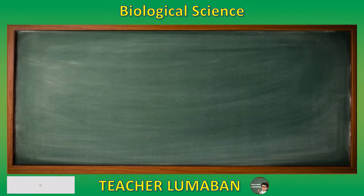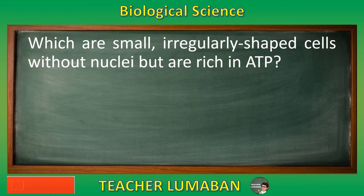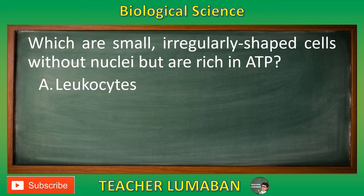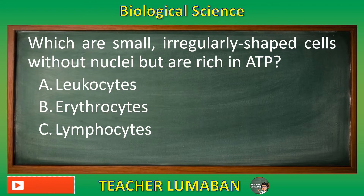Which are small, irregularly shaped cells without nuclei but are rich in ATP? Letter A: Leukocytes. Letter B: Erythrocytes. Letter C: Lymphocytes. Letter D: Thrombocytes.